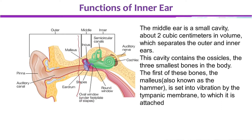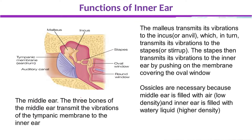These are three small bones, and they are the smallest bones in the body. The first is named the malleus, which we call the hammer, because it is shaped like a hammer. It is attached to the tympanic membrane and receives its vibration.